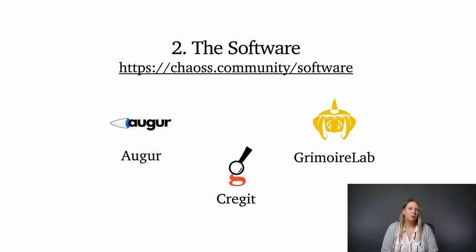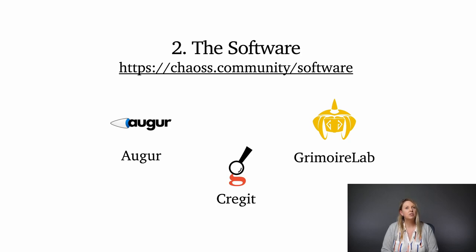Let's move on to our next goal, which is to produce software that can collect and report on metrics. We have three software projects under the KAOS umbrella: Augur, GrimoireLab, and Craigit. Augur is an open source Flask web application, Python library, and REST server that presents metrics on open source software development project health and sustainability, primarily focusing on GitHub and GitLab.